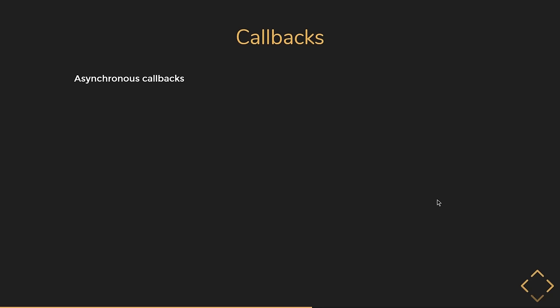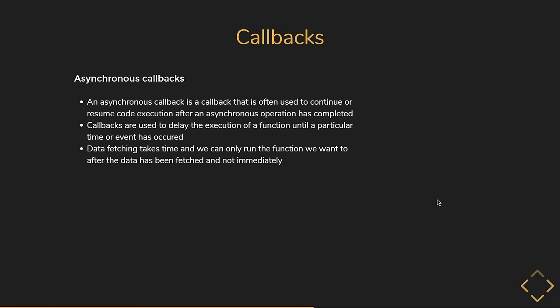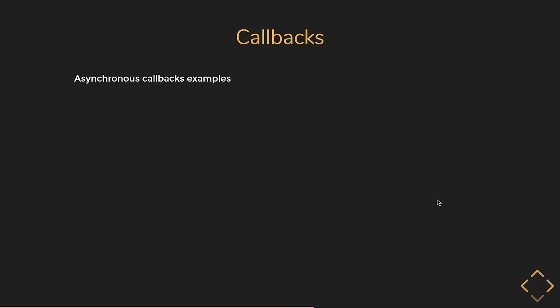Let's move on to asynchronous callbacks. An asynchronous callback is a callback often used to continue or resume code execution after an asynchronous operation has completed. In the async world, callbacks are used to delay the execution of a function until a particular time or event has occurred. Most applications have some sort of data to be fetched, and data fetching takes time — we can only run the function we want after the data has been fetched, not immediately.